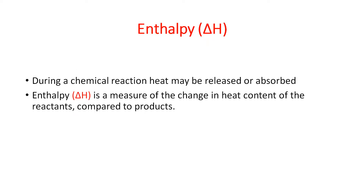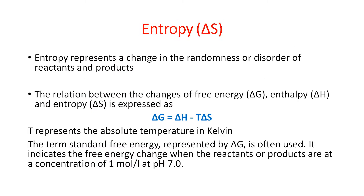Enthalpy, delta H: during a chemical reaction, heat may be released or absorbed. Enthalpy is a measure of the change in heat content of the reactants compared to the products. Entropy represents a change in the randomness or disorder of reactants and products. The relation between the change in free energy, enthalpy, and entropy is expressed in the equation, where T is the temperature in Kelvin. The standard free energy, represented by delta G, indicates the free energy change when reactants and products are at a concentration of one mole per liter at pH 7.0.